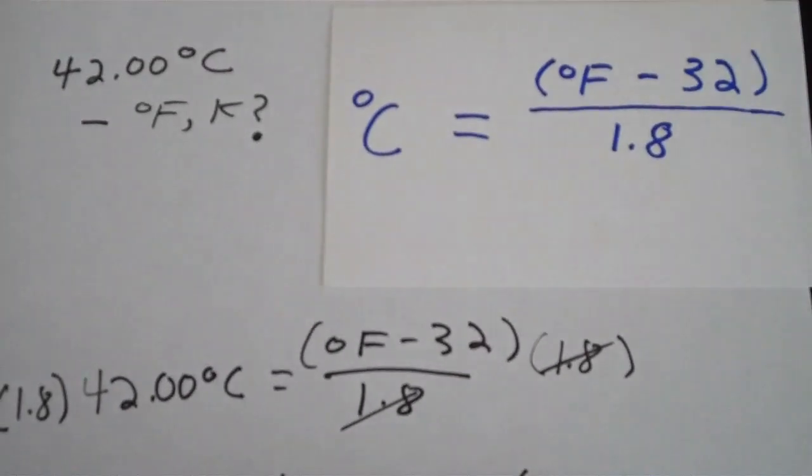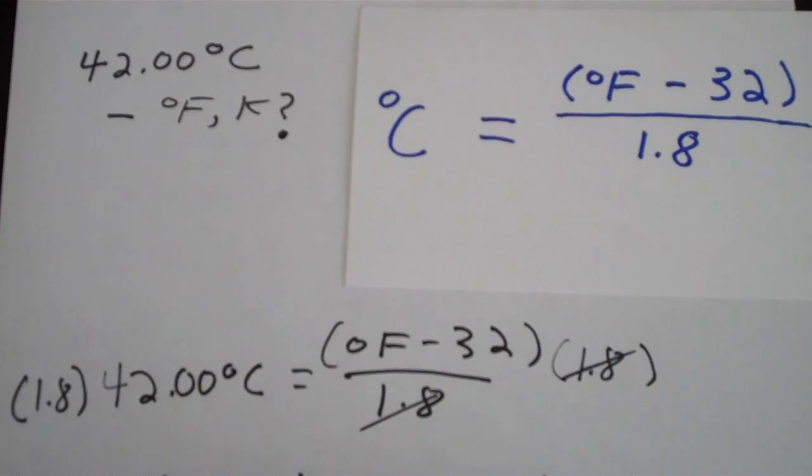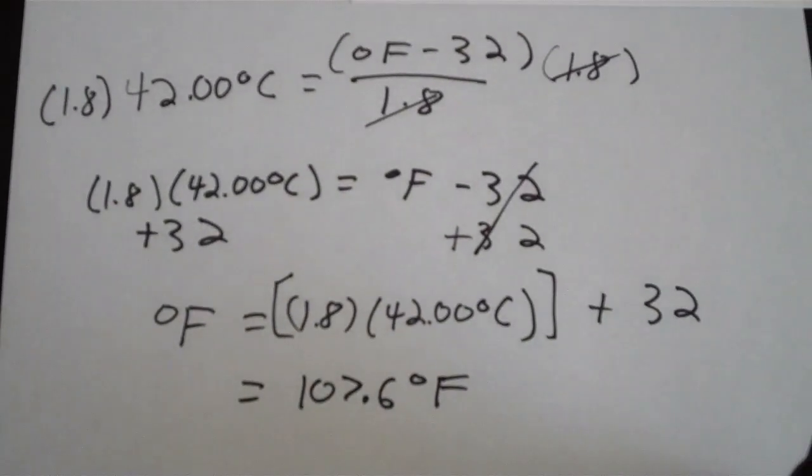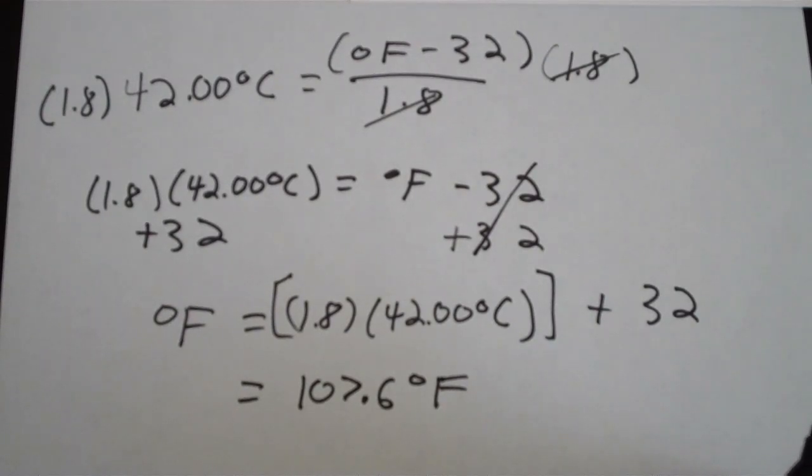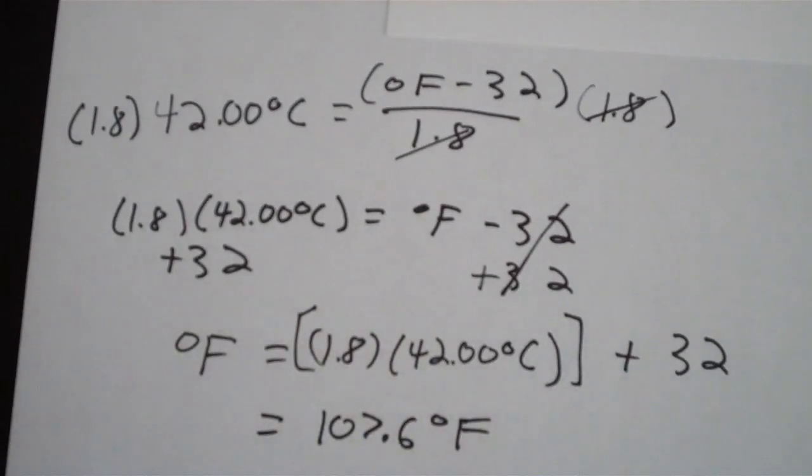So if you had a body temperature of 42.00 degrees Celsius, you would be in deep, deep trouble because that's pretty hot. All right, let's move on to Kelvin.